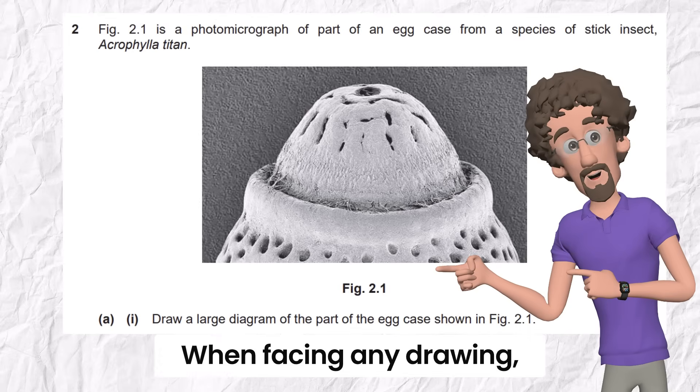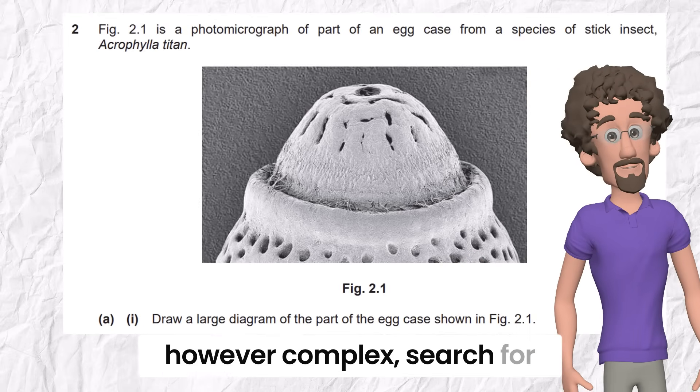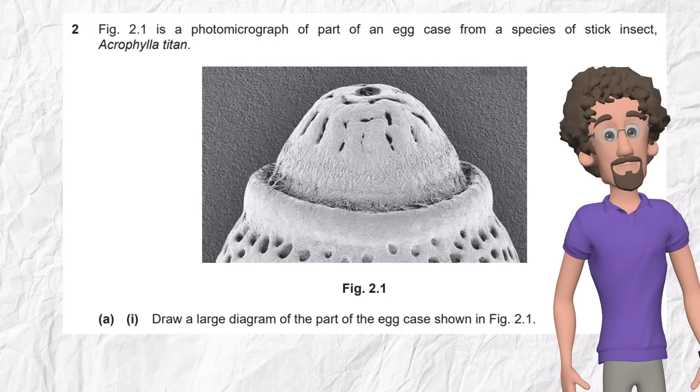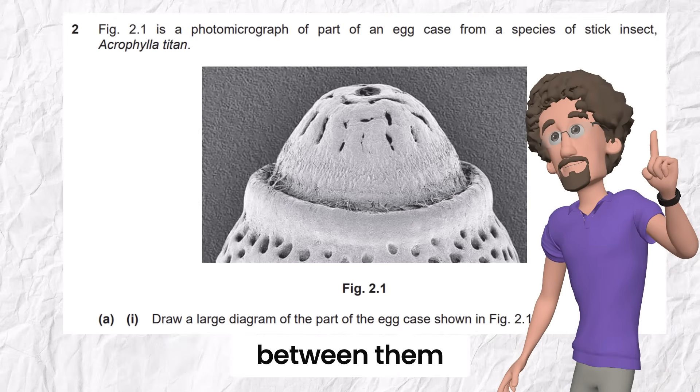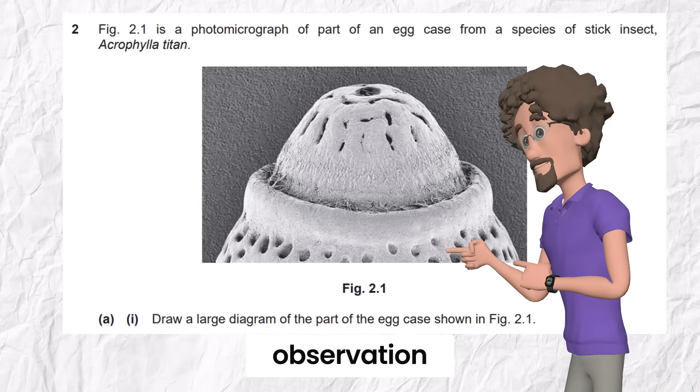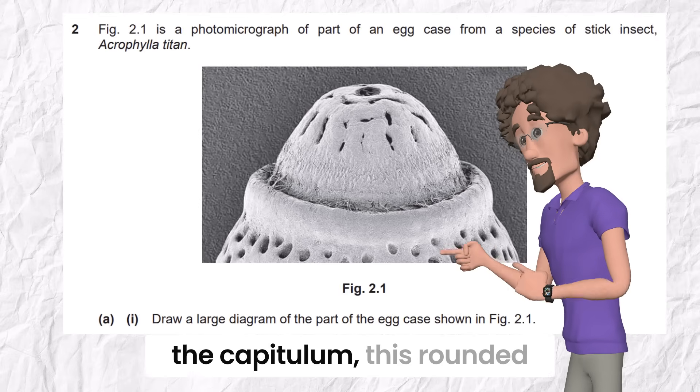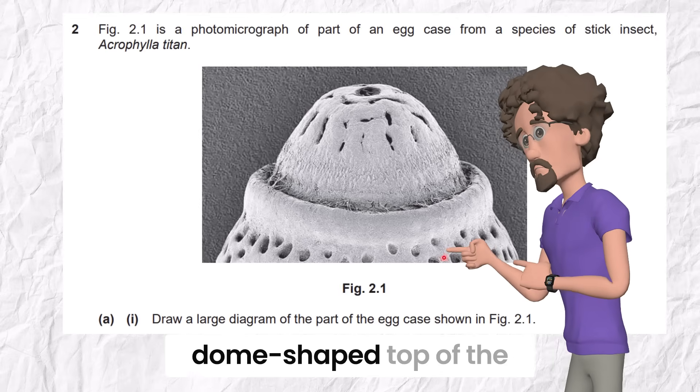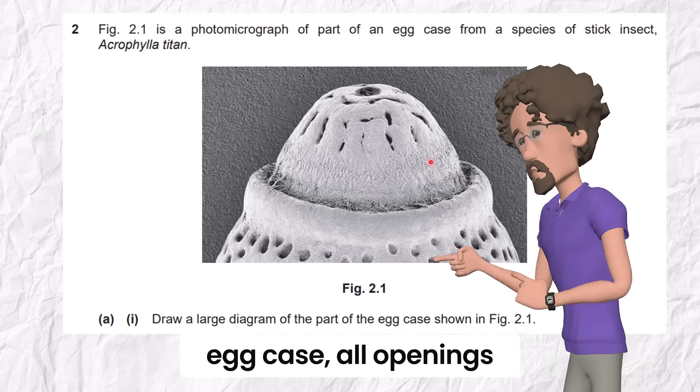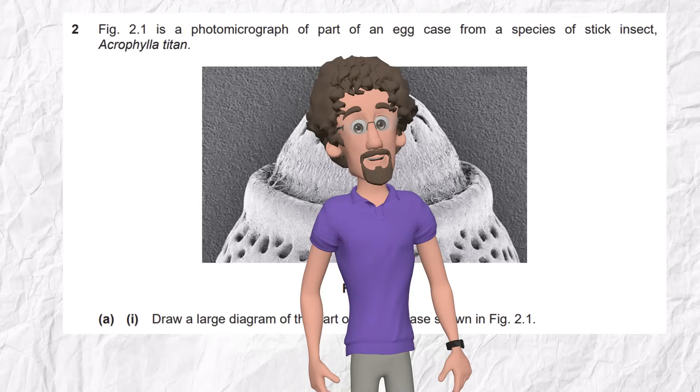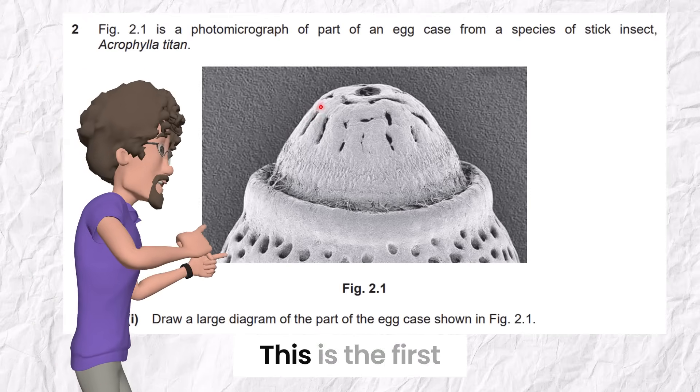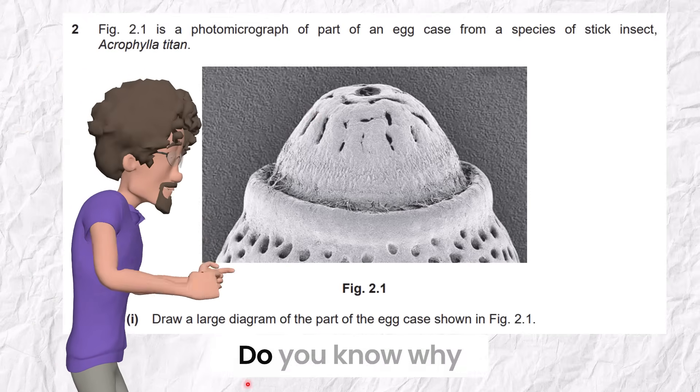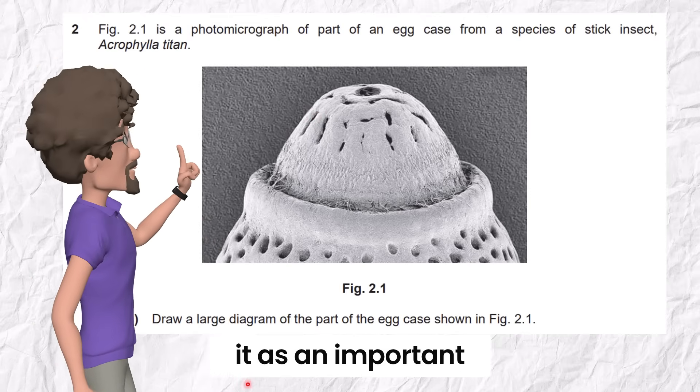When facing any drawing, however complex, search for distinctive morphological landmarks. If you see a lot of random openings, search for landmarks in between them. You must pick one observation. For example, here in the capitulum, this rounded dome-shaped top of the egg case, all openings are meaningless, except one dark circle on top of the capitulum and two parallel lines on the left. This is the first detail.